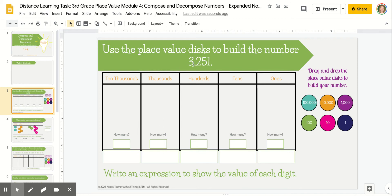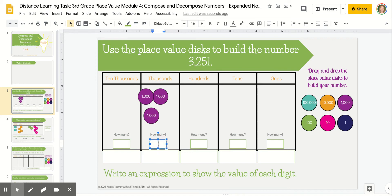For example, my number has three thousands. To model that, I would drag three of my thousands disks into my place value chart. To organize myself, I can record how many I have: three thousands.